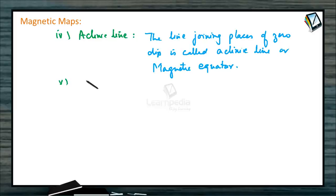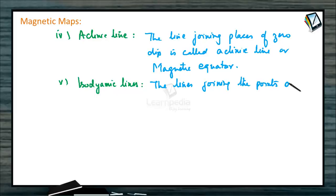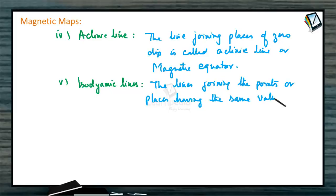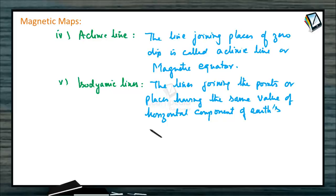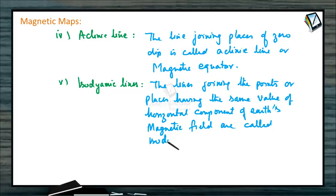Similarly, isodynamic lines are the lines joining the points or places having the same value of horizontal component of earth's magnetic field.